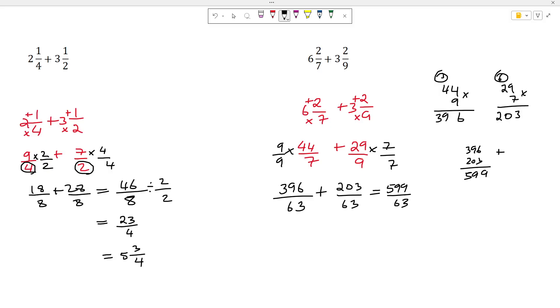Now in many cases after they reach this method, they would want you to convert into a mixed number. So let's go ahead and convert into a mixed number. So we have 599 divided by 63. Now let's see, 63 times what? 63 times 8?